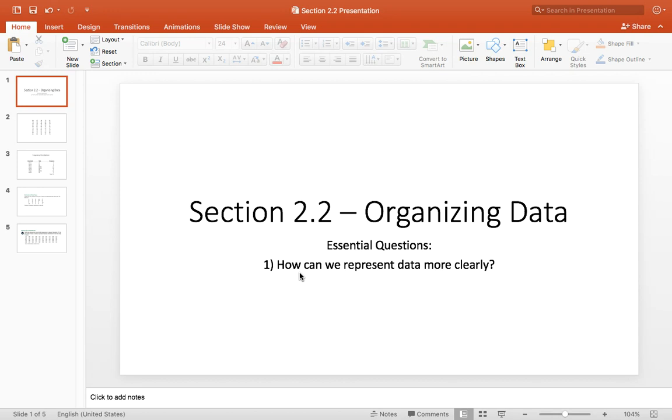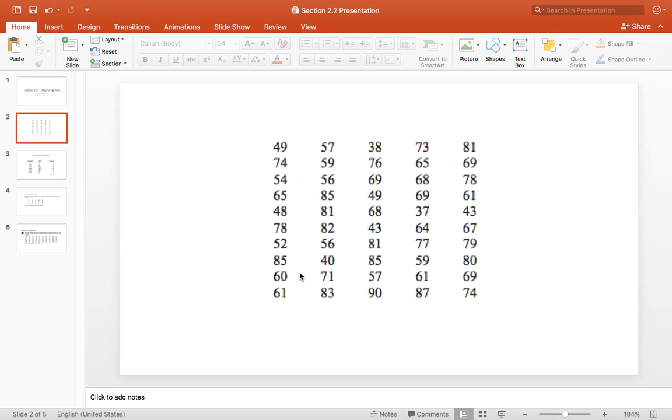All right, so let's just say that a researcher decides to do a study on the age of the 50 richest people in the world. So he does research, he compiles his data, and this is what it looks like. Is this easy for you to read and interpret? It's really messy, it's sloppy, it was not written in any form that allows for the reader to easily interpret or even make any inferences about this data.